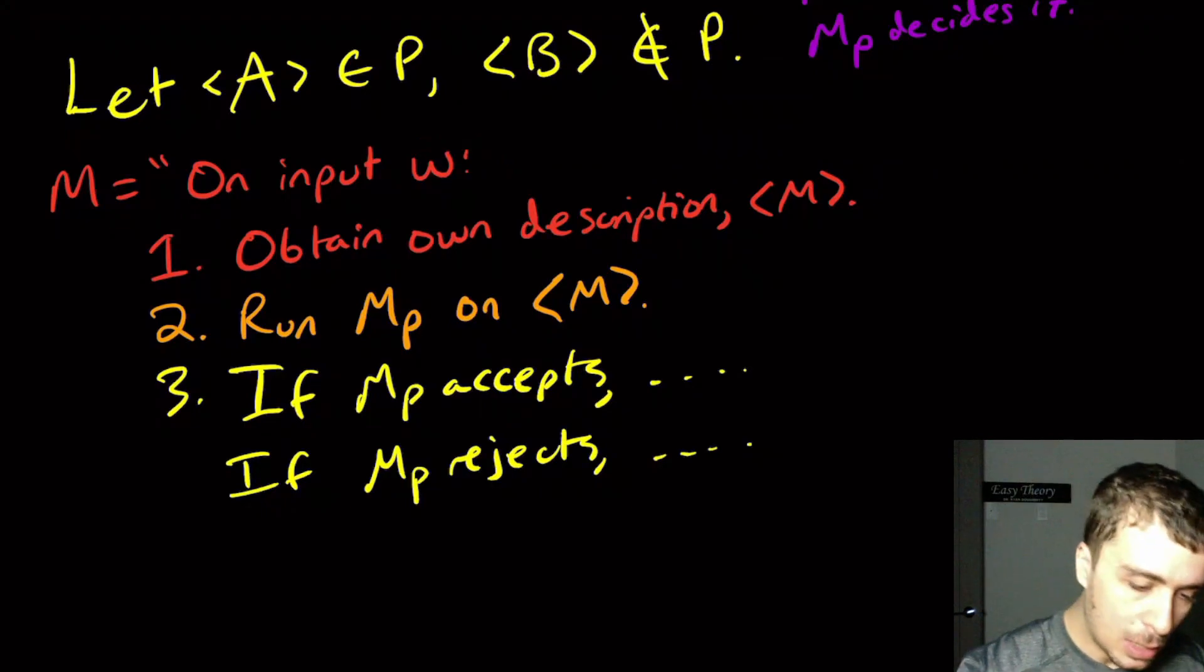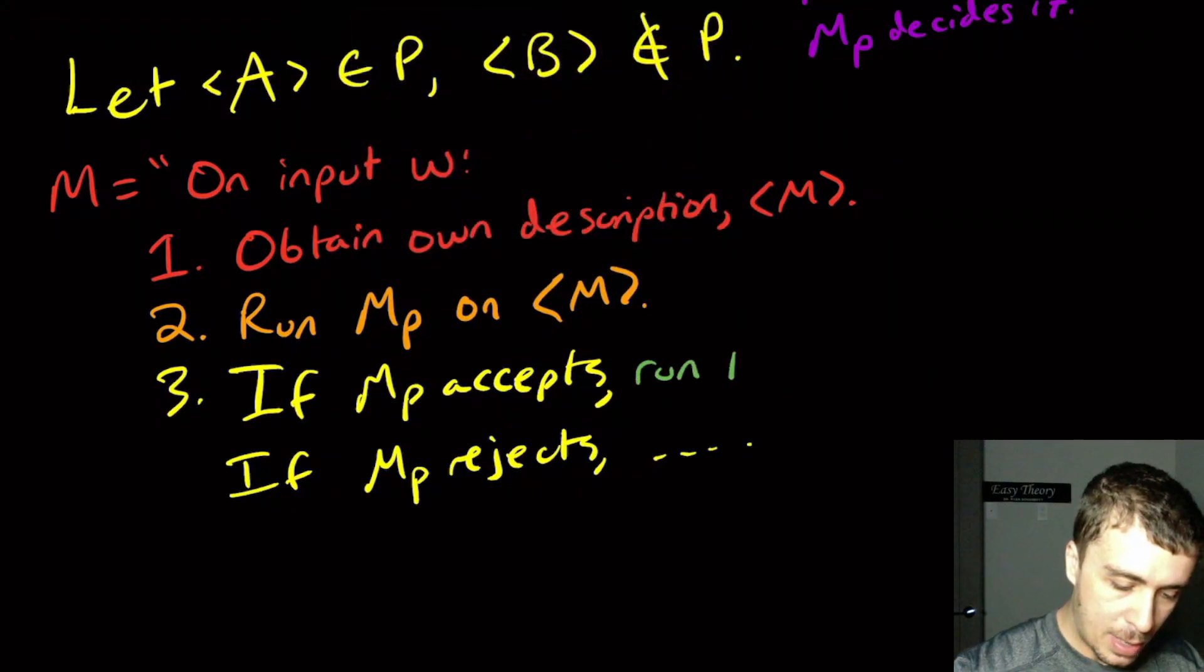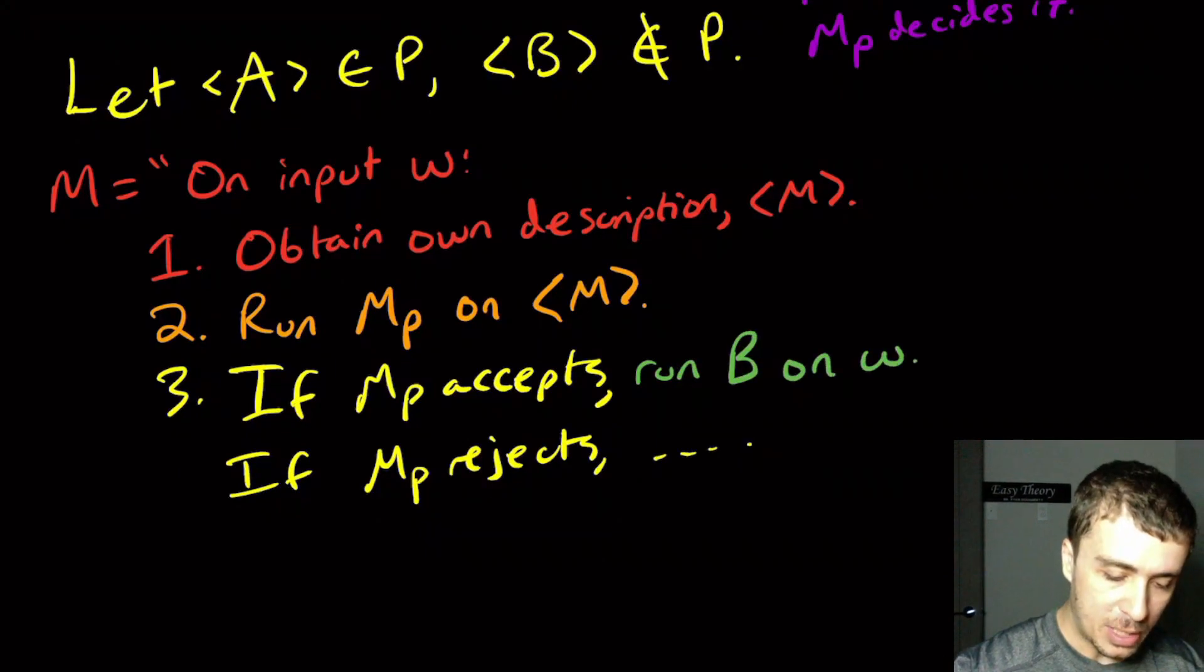Because it is identical to the B machine with respect to the strings that it runs. Here what I'm going to do is run B on W, and you can probably guess what's going to happen here. I'm going to run A on W.